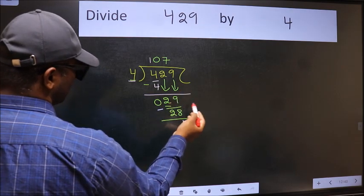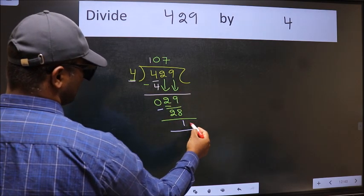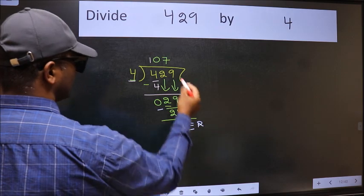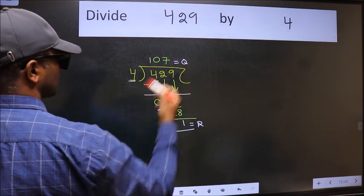No more numbers to bring down, so we stop here. This is our remainder and this is our quotient.